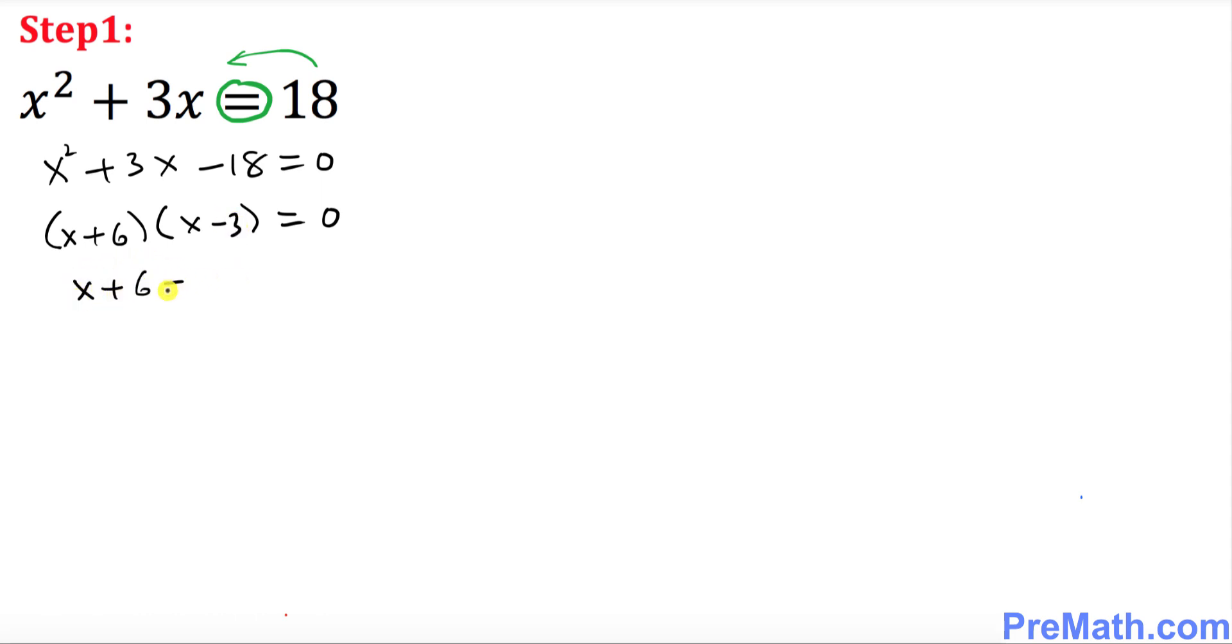x plus 6 equal to 0 and the other one is going to be x minus 3 equal to 0. So x equal to negative 6 is one of your x values and x equal to positive 3 is another one.